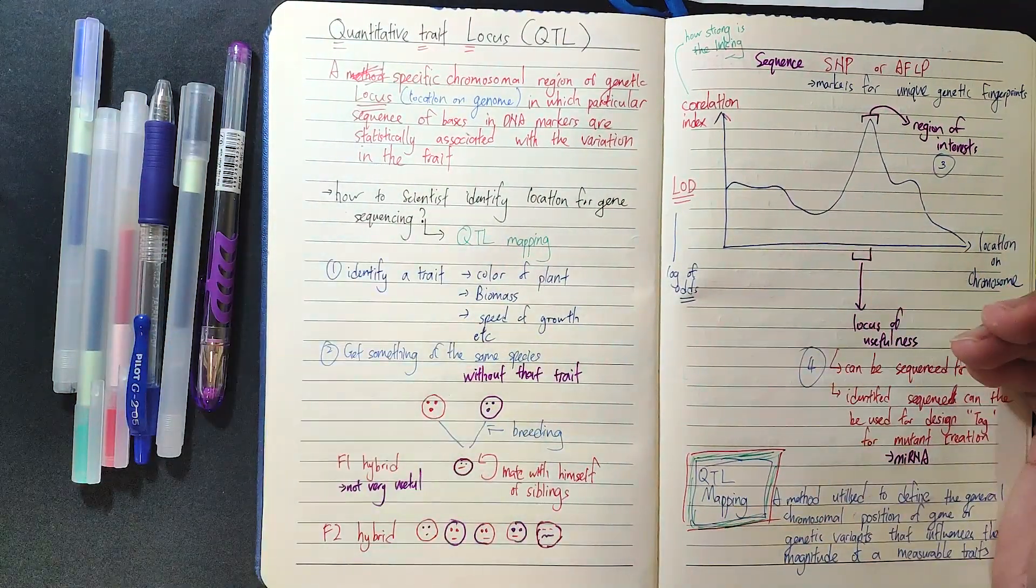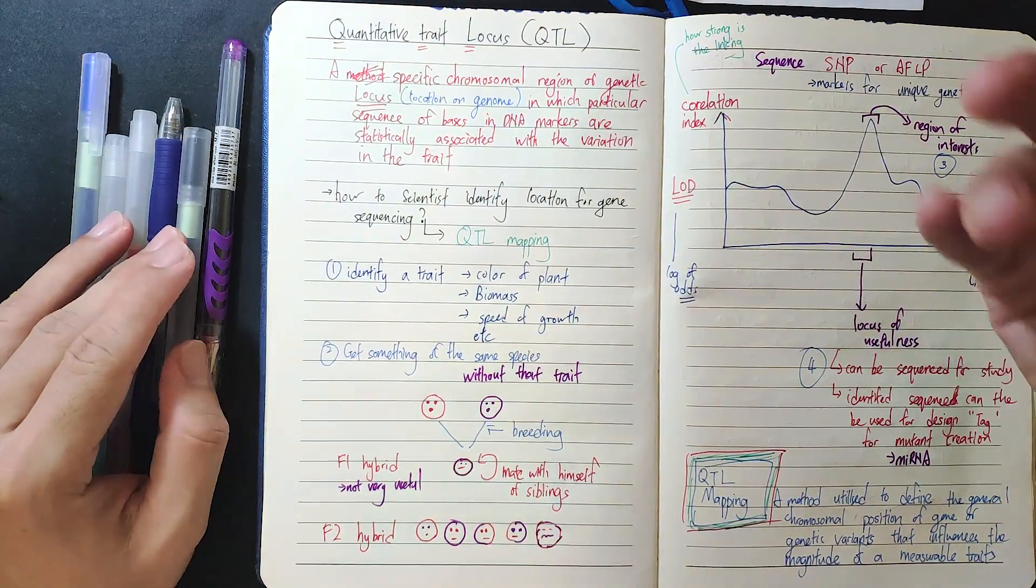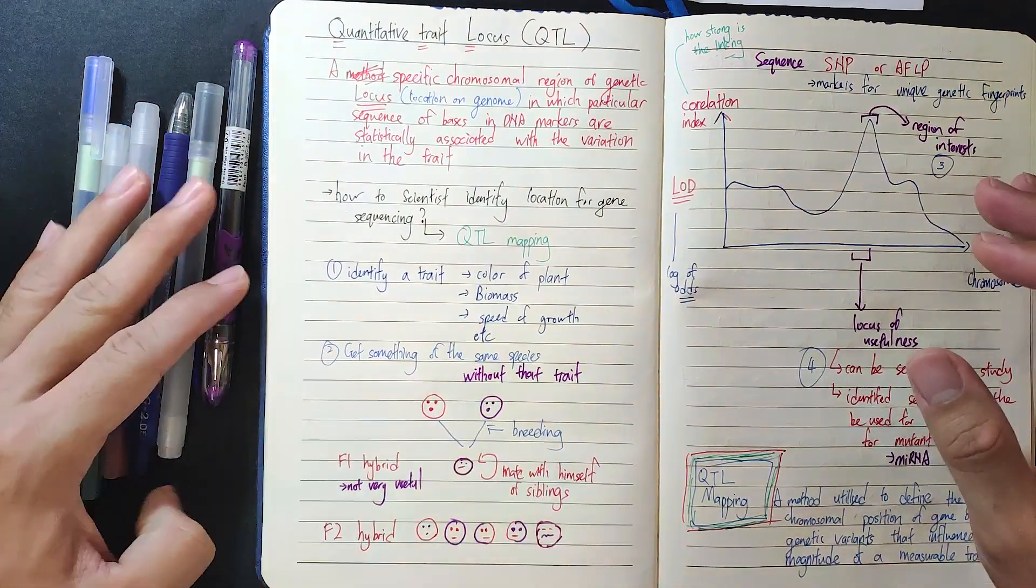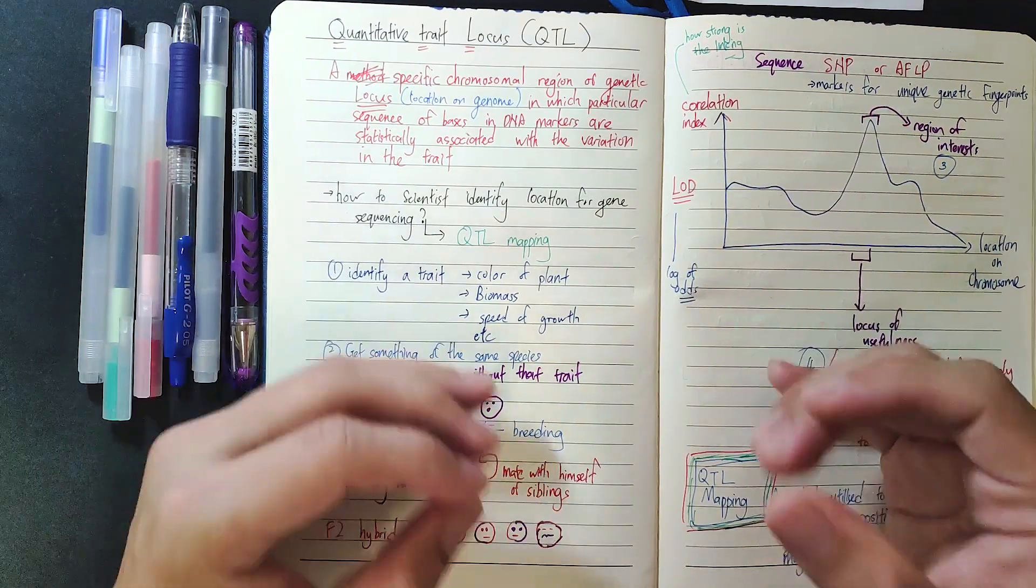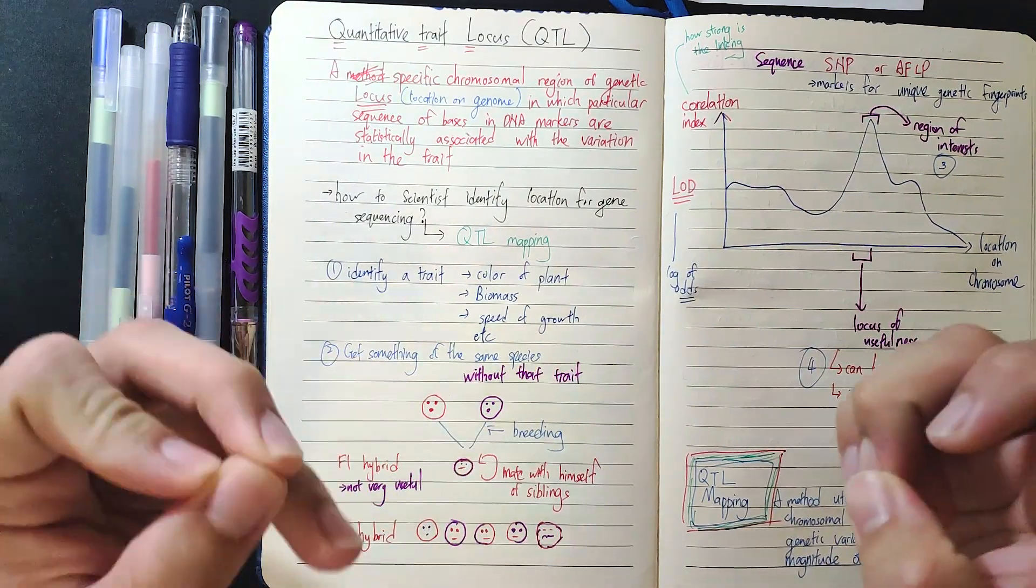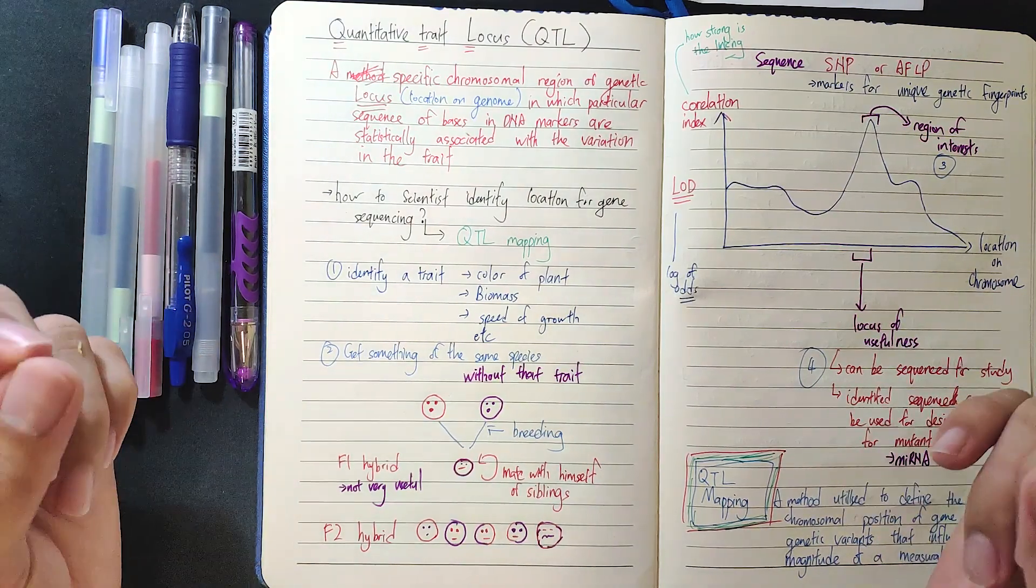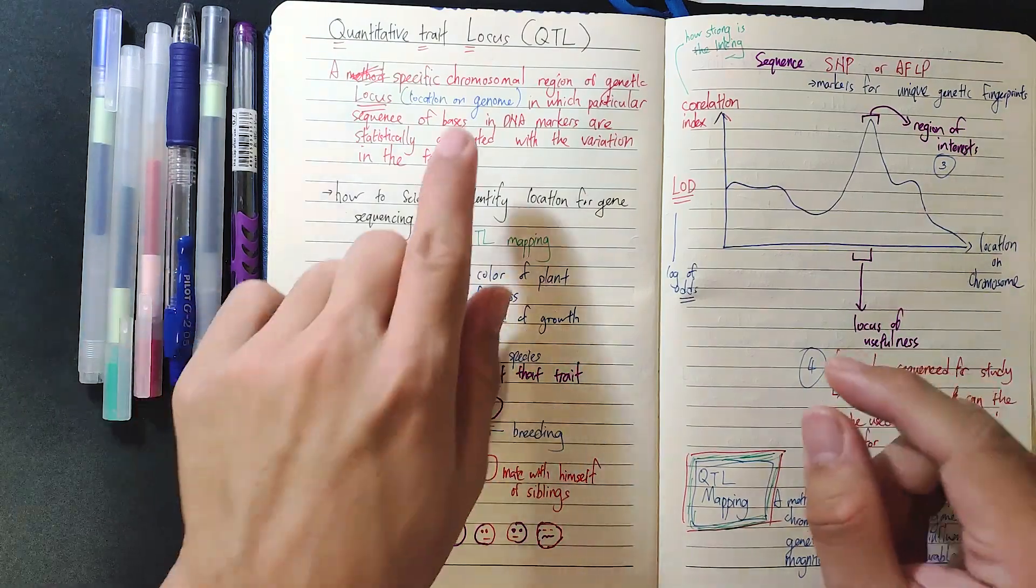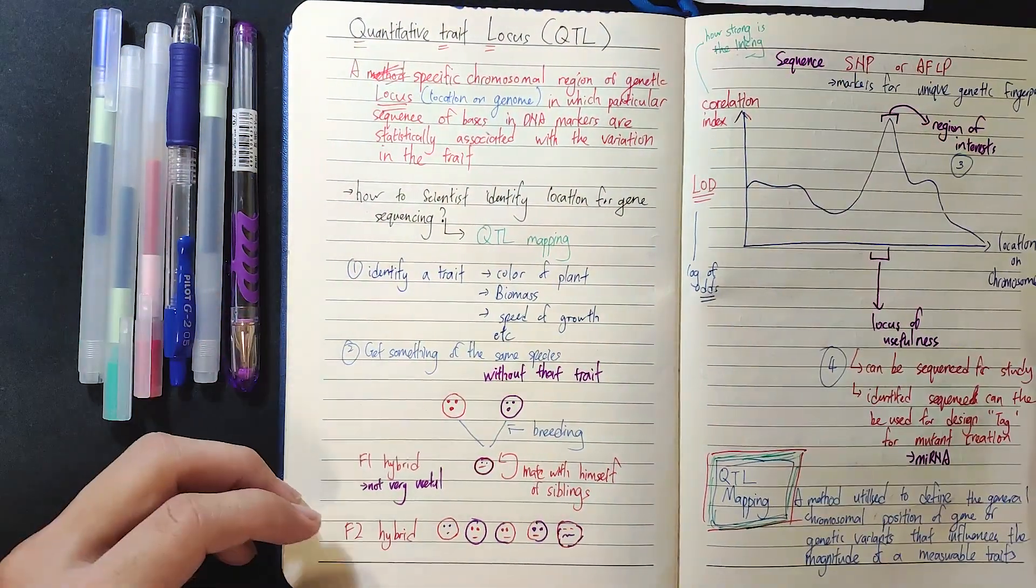So that is a very complicated process. Remember, this is done maybe 20-30 years ago without the tool for next generation sequencing. So with next generation sequencing, of course you can just sequence everything at once, but without that, QTL actually helps a lot to identify specific locations of genes, multiple locations that are directly related to single traits on the genome in plants.